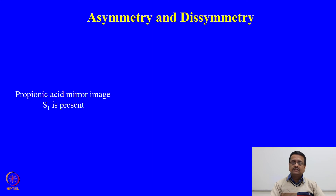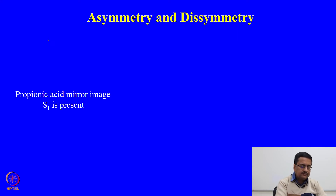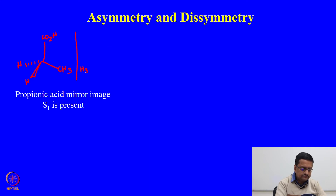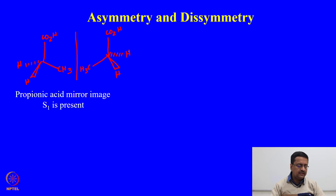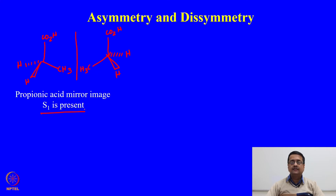Let us see three examples of three different types of molecules. The first is propionic acid and its mirror image. Propionic acid is a 3-carbon acid with a CH2 group in between, and the corresponding mirror image can be drawn. What we see is that this molecule has an S1 axis present, and as a result this molecule is a symmetric molecule, even though it does not have any Cn greater than 2 — it has C1 of course.